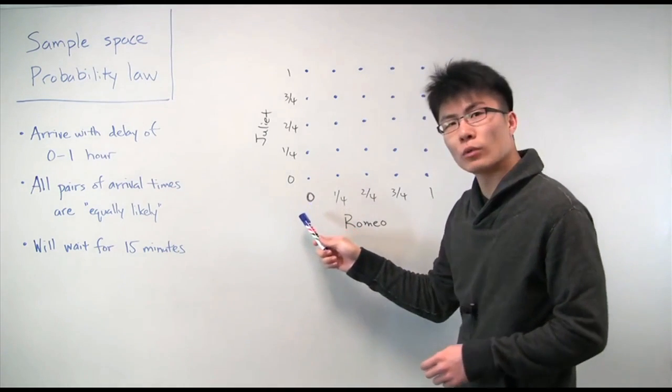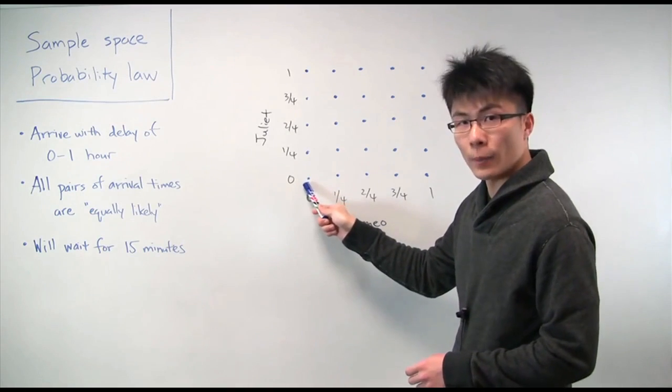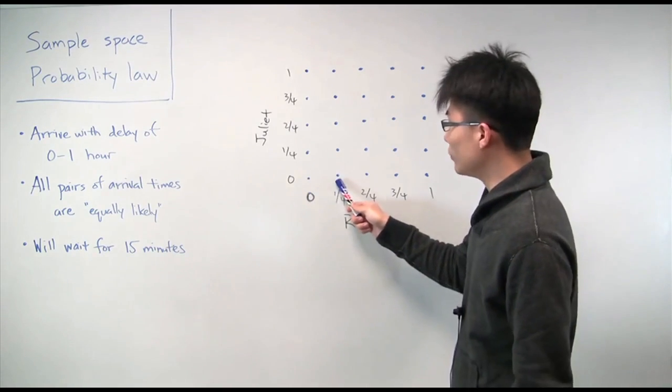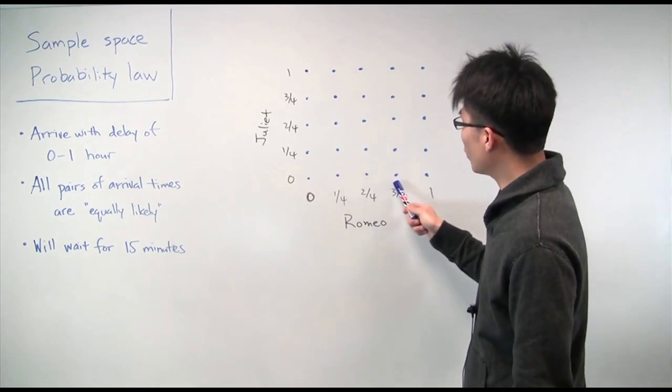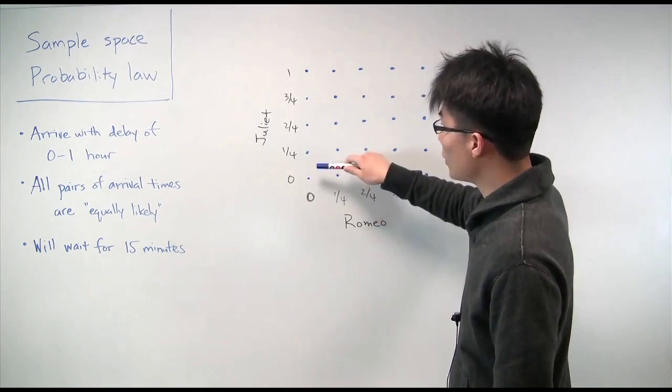Romeo and Juliet can only arrive in 15 minute increments. So Romeo can arrive on time with a delay of 0, or be 15 minutes late, 30 minutes late, 45 minutes late, or 1 hour late. But none of the other times are possible. And the same thing for Juliet.